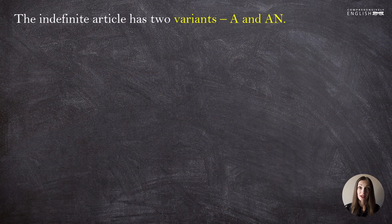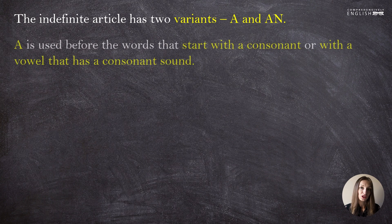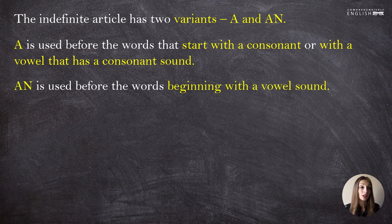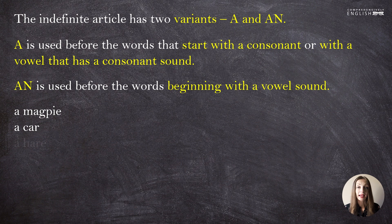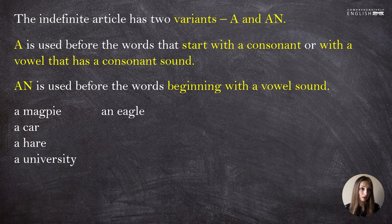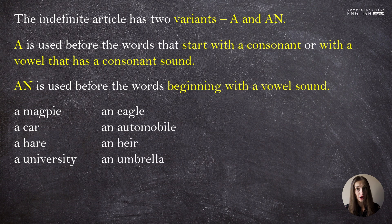The indefinite article has two variants: 'A' and 'AN.' 'A' is used with words that start with a consonant or with a vowel that has a consonant sound. 'AN' is used before words beginning with a vowel sound. For example: a magpie, a car, a hair, a university — but an eagle, an automobile, an air, an umbrella.